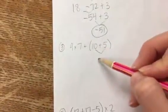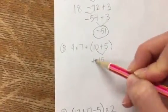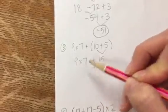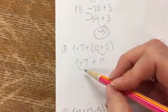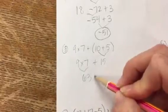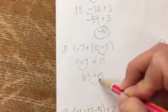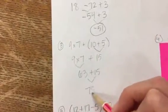I'm going to start with the parentheses. 10 plus 5 is 15. Bring down the rest of the problem. 9 times 7 is 63 plus 15. 63 plus 15 is 78.